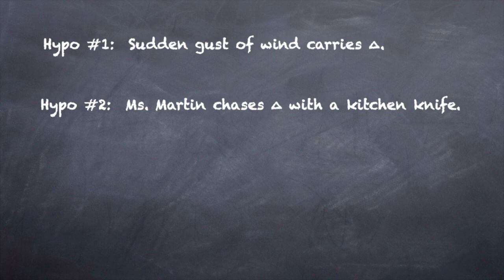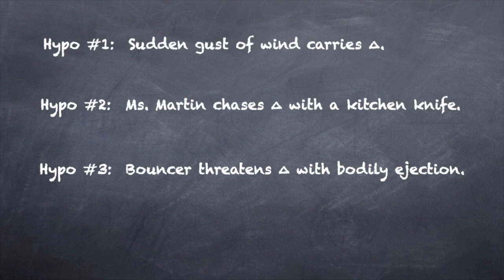Now consider a different scenario. In the third hypothetical, the drunken defendant is in a bar and is threatened by the bouncer with bodily ejection. Rather than be thrown out, the defendant walks into the street and cusses out the bouncer. In hypothetical number three, the defendant is convictable. This is essentially the same case as hypothetical number two, with the bouncer taking the place of Mrs. Martin.